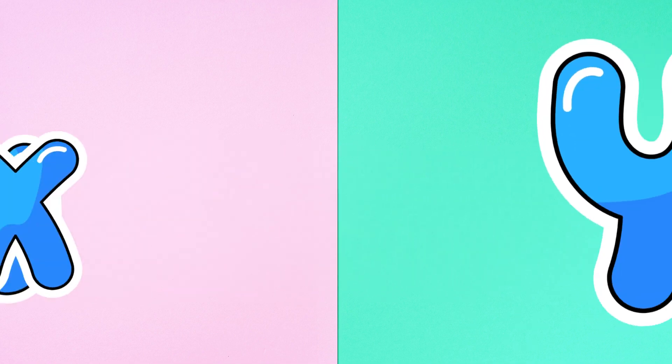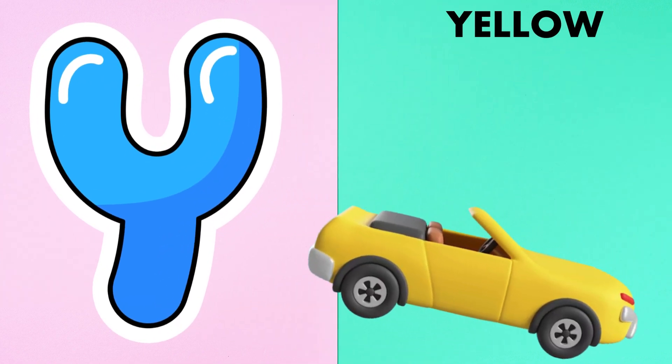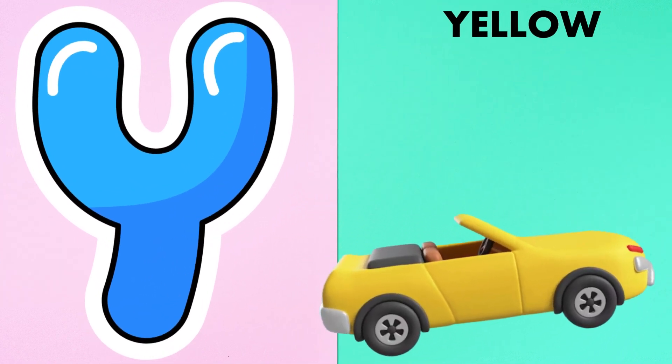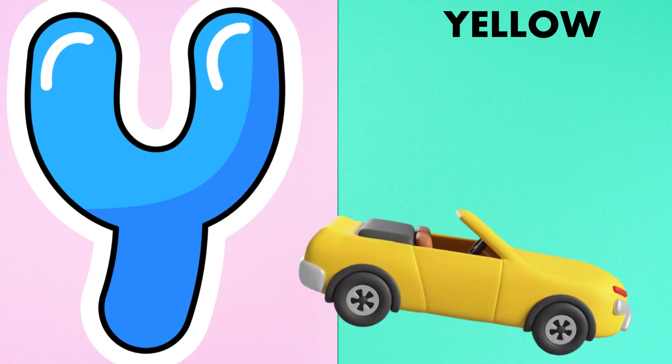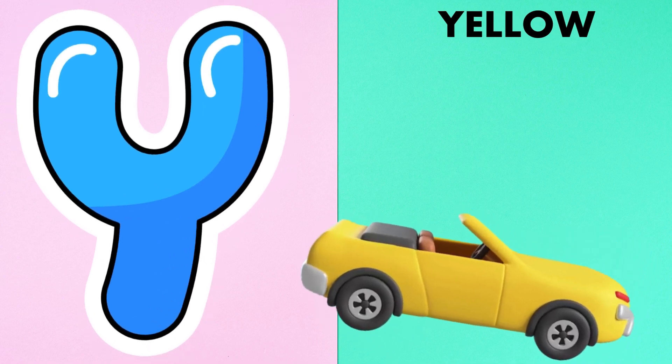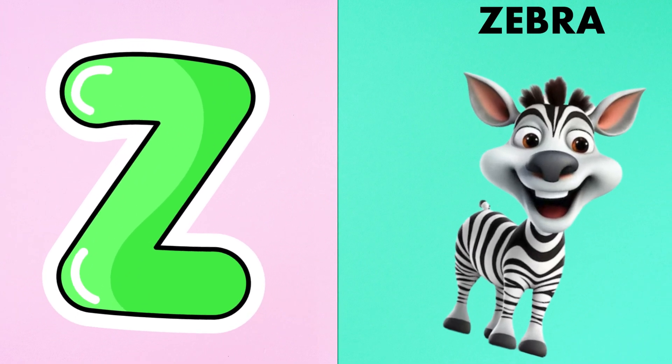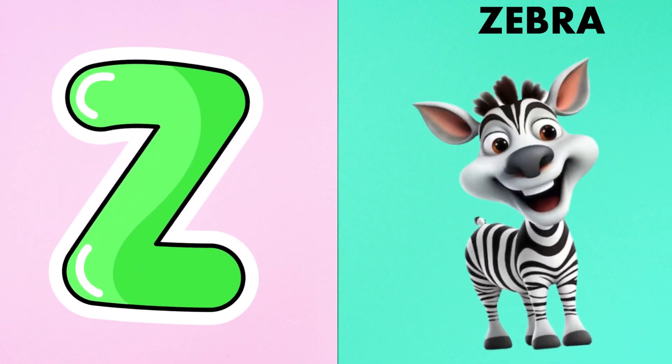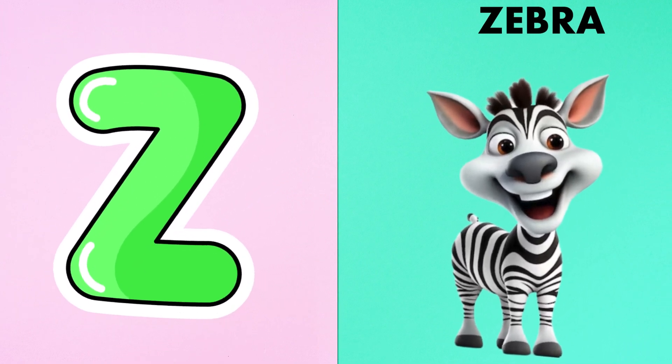Y is for yellow, ye-ye-yellow. Z is for zebra, z-z-zebra.